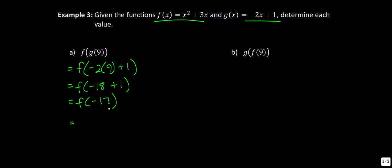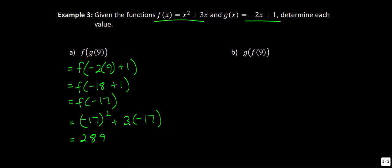Now we take negative 17 and substitute it into f of x. That gives us negative 17 squared plus 3 times negative 17. Negative 17 squared is 289, and 3 times negative 17 is negative 51. So 289 minus 51 equals 238 as the final answer.